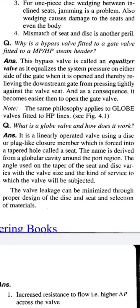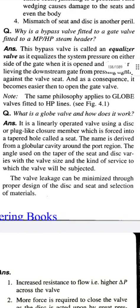Why is a bypass valve fitted to a gate valve fitted to a MPHP steam header? Answer: The bypass valve is called an equalizer valve as it equalizes the system pressure on either side of the gate valve when it is opened, thereby relieving the downstream gate from pressing tightly against the valve seat. As a consequence, it becomes easier to open the gate valve.